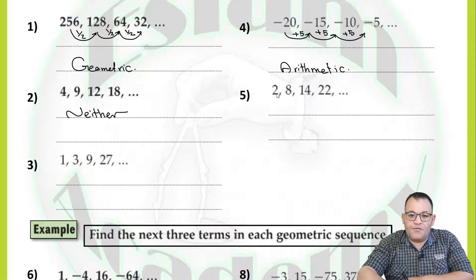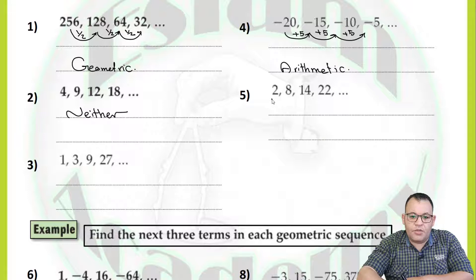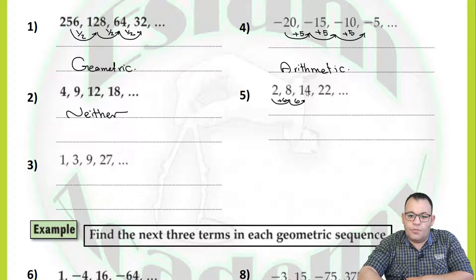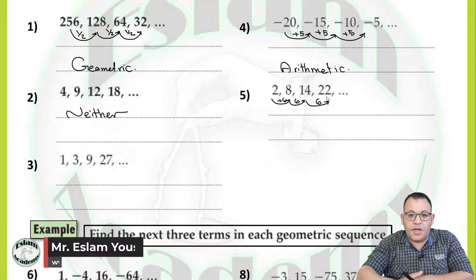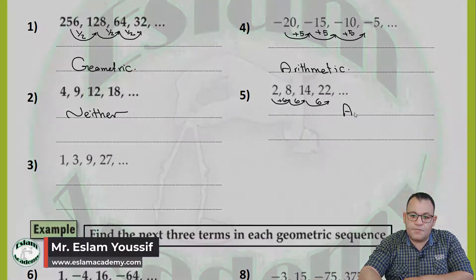In number five, we have 2, 8, 14, and 22. 8 minus 2 equals 6, meaning we add 6. 14 minus 8 equals 6. 22 minus 14 equals 6. Because you add the same number each time and the common difference is the same, it is an arithmetic sequence.